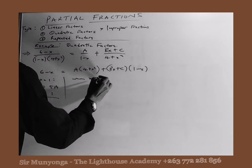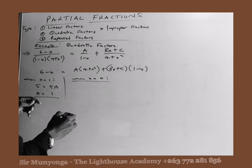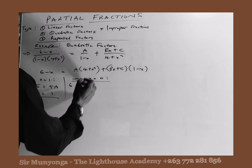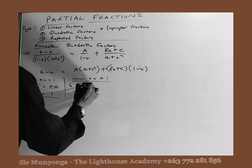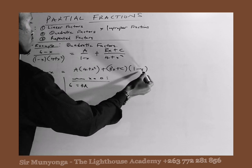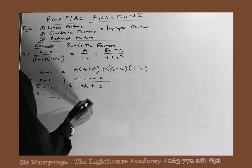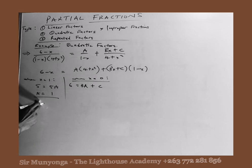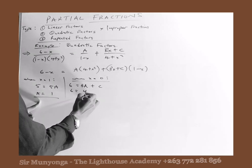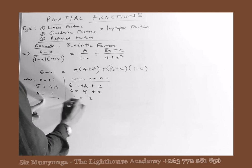Next, when x is equal to 0, the left-hand side becomes 6. On the right-hand side we get 4A plus C. Since we already know A equals 1, that gives us 4 times 1, which is 4, plus C equals 6. Therefore C is equal to 2.